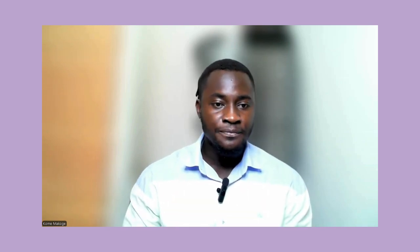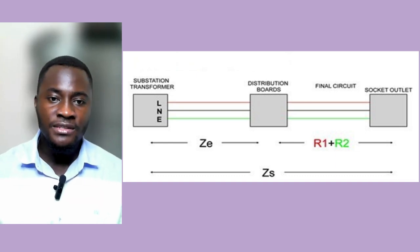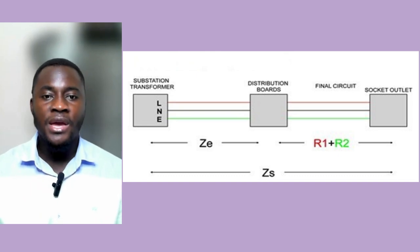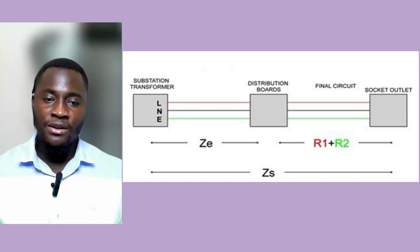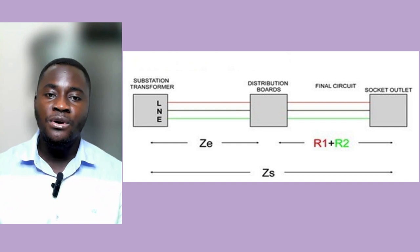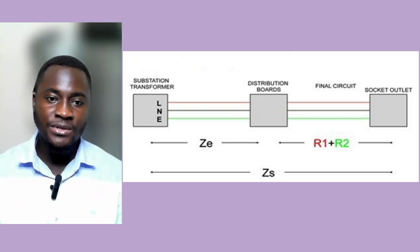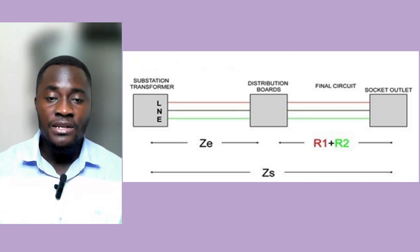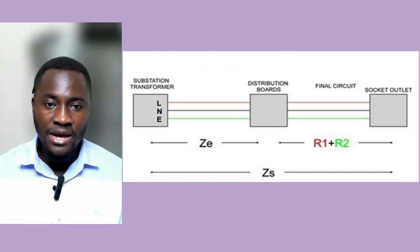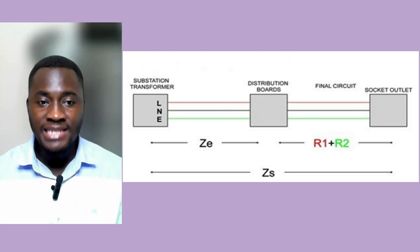We verify that we have the required voltage before proceeding with the different tests — the earth fault loop impedance and the prospective fault current. We have two different earth fault loop impedance measurements: we have the ZE and the ZS. The ZE is the external part of the circuit at the DB side, while the ZS is at the field side where we have the socket outlets. The test at the socket outlet side is called the ZS test.